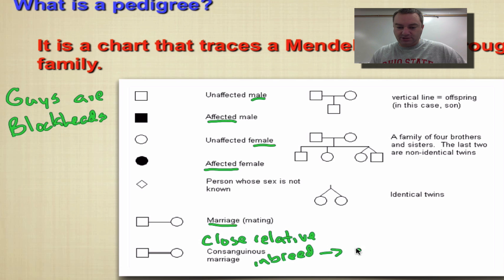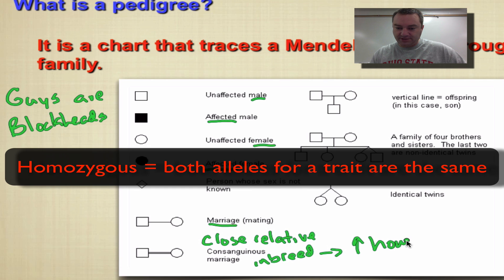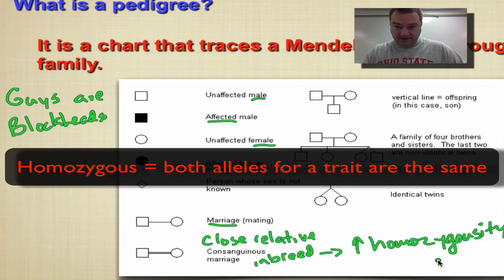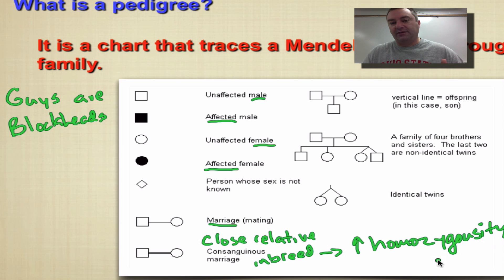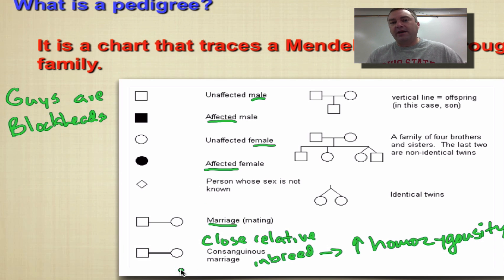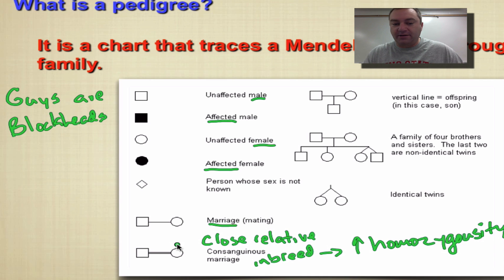Inbreeding leads to an increase in homozygosity. If you mate with members of your own family, the offspring will have many of the same alleles because the gene pool is very small. We normally don't see this in pedigrees unless looking at a unique pedigree for a very isolated population — like one on an island, an isolated valley, or separated by geographic barriers such as oceans, mountain ranges, impenetrable jungles, or deserts.